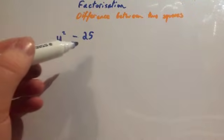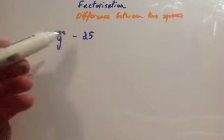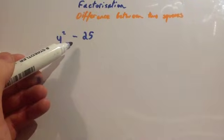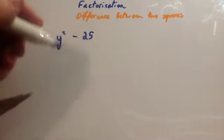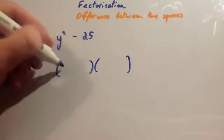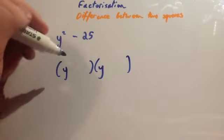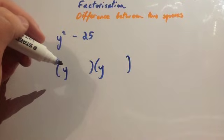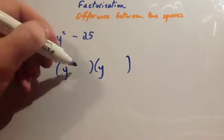If I had y² - 25, well y² is something squared, 25 is a squared number, and you have the minus for difference. Fantastic, so we can factorize it. So you put y in both brackets.